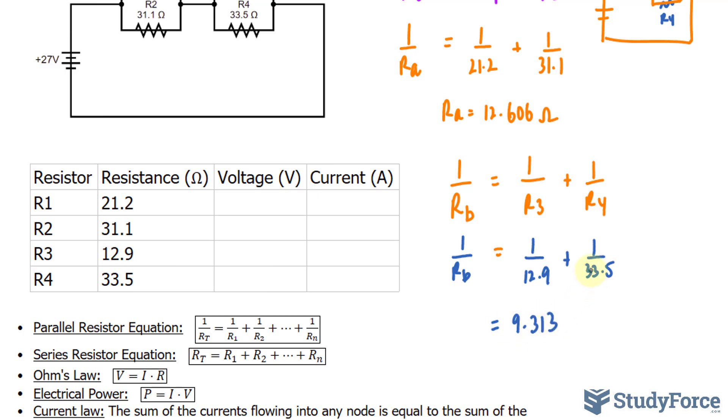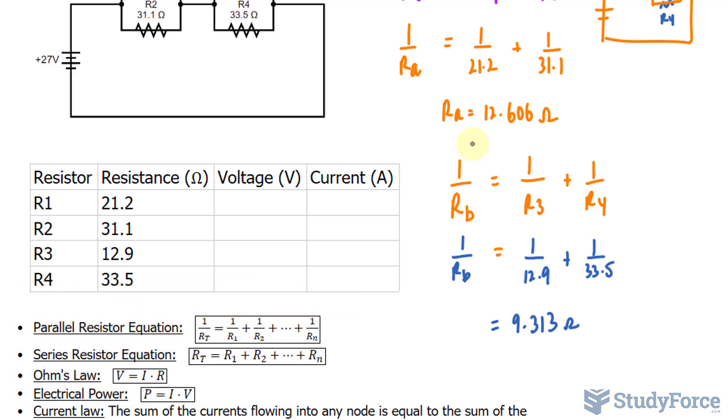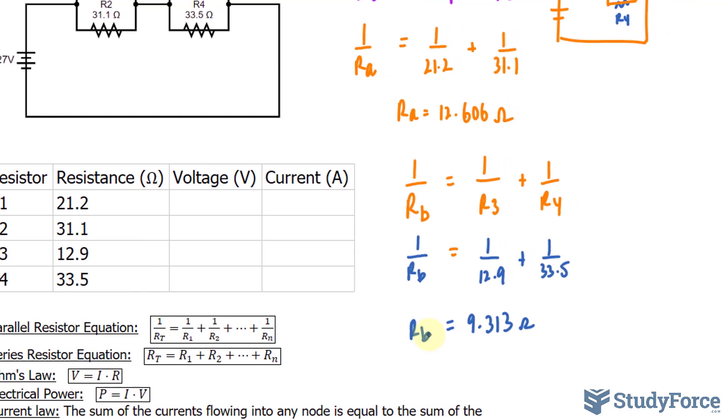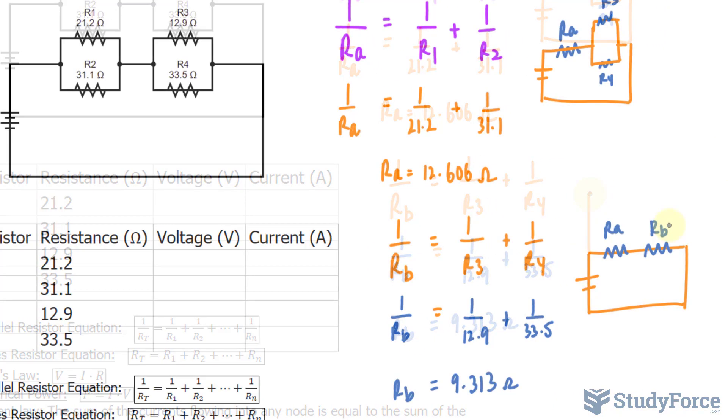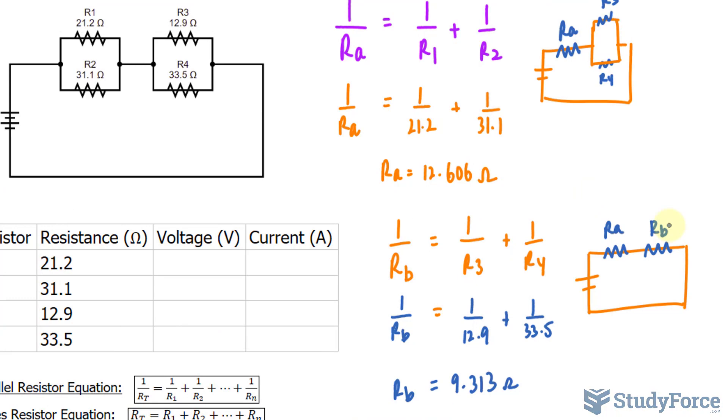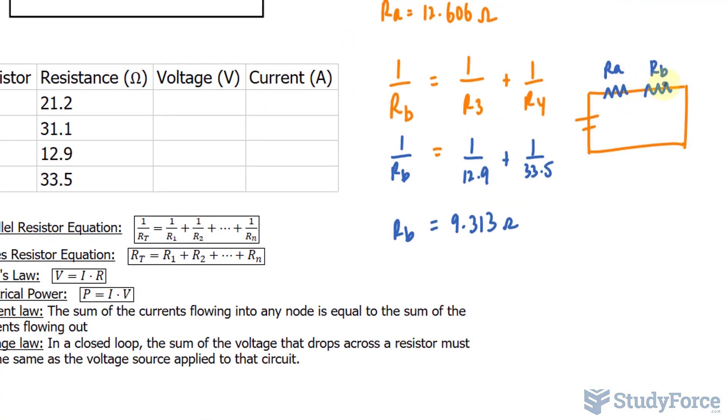9.313. Notice that I carry several numbers after the decimal place. You don't want to round as you're doing this, because you will run into rounding errors. You want to carry as many numbers after the decimal place to prevent those errors from occurring. So that's RA and that's RB. And let me redraw what I have right now. As I said at the beginning, I want to combine all these resistors into one to simplify the circuit.